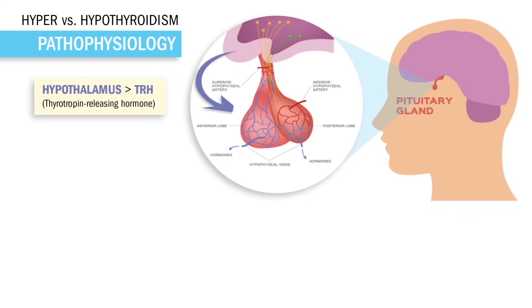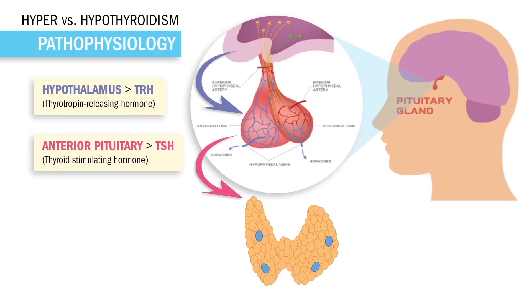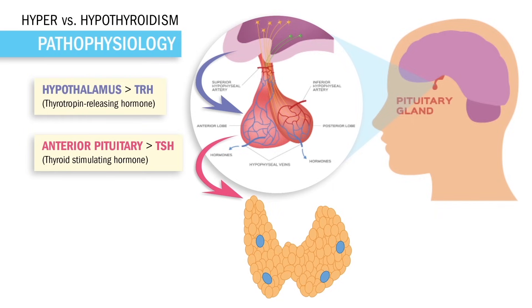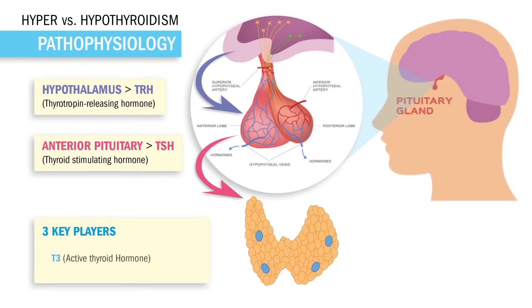The hypothalamus releases TRH, which then tells the anterior pituitary to release TSH — the thyroid stimulating hormone. And can you guess what the thyroid stimulating hormone does? Well yes, it stimulates the thyroid. How stimulating! So once stimulated, the thyroid pops out three most important key players: T3 and T4, which are basically our active thyroid hormones, and also calcitonin, which basically puts a ton of calcium into the bone. Our memory trick: it tones down the calcium in the blood by putting a ton of calcium into the bone — calcitonin, a ton in the bone.